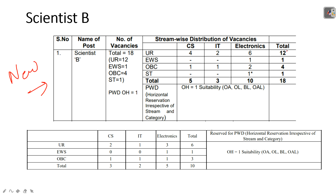For Scientist B: CS has 5 vacancies, IT has 3 vacancies, and Electronics has 10 vacancies. Earlier it was CS 3, IT 2, and Electronics 5 — so Electronics is now doubled. ST candidates from Electronics get one reserved post. ST candidates from CAS/IT and EWS candidates from CAS/IT need to apply under the Open category only, as there is no reserved option for them.